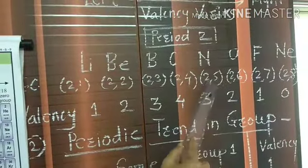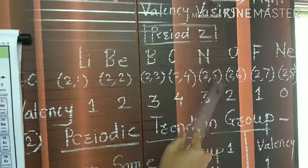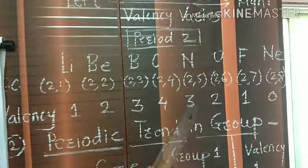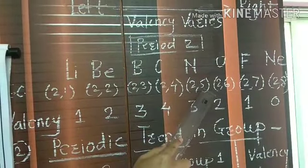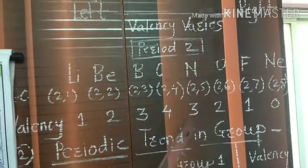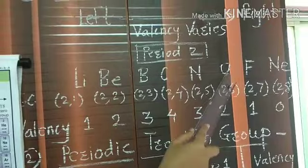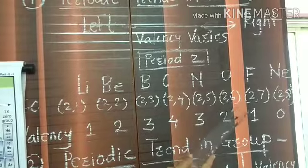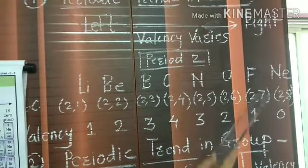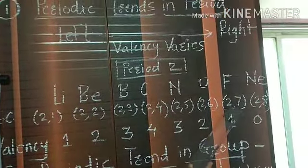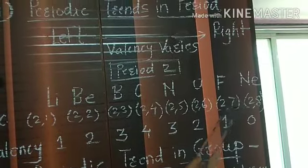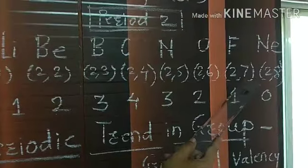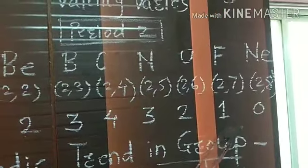Nitrogen has configuration 2,5. If nitrogen gains 3 electrons from another element, it completes its octet, so the valency of nitrogen is 3. Oxygen has configuration 2,6, so its valency is 2. Fluorine has configuration 2,7. If fluorine gains 1 electron from another element, it completes its octet, so the valency of fluorine is 1.